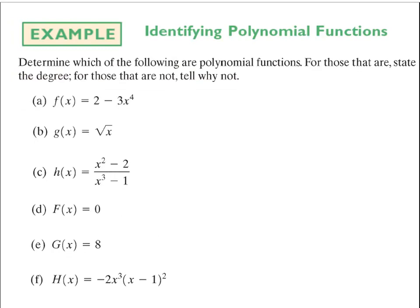One of the first homework problems is looking at an equation, determining whether it is a polynomial, and if so, what is its degree. The first one, letter a, is a polynomial — it has all real-valued coefficients and whole number non-negative integer exponents. The degree is 4, which is the largest power.